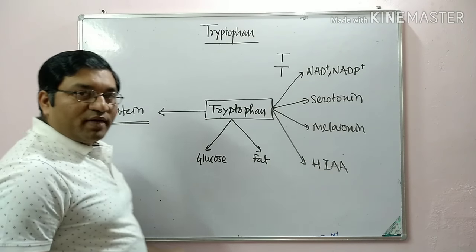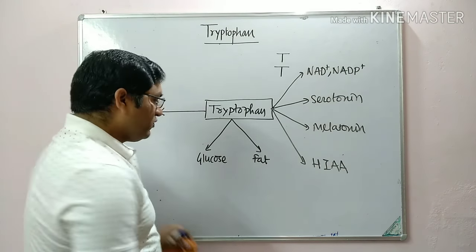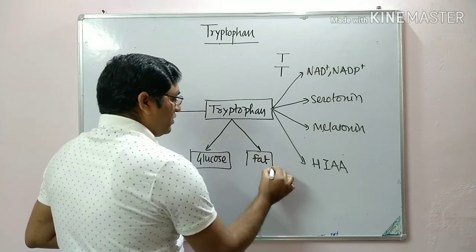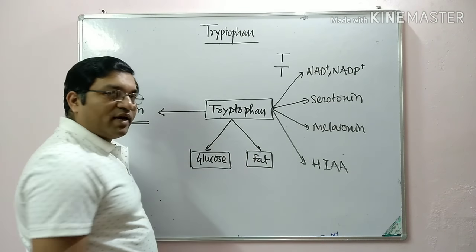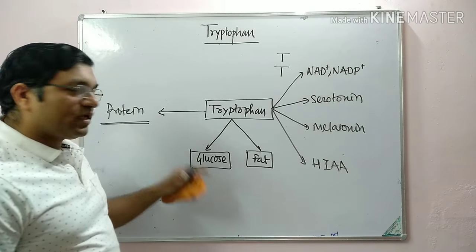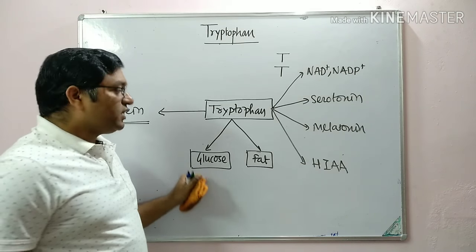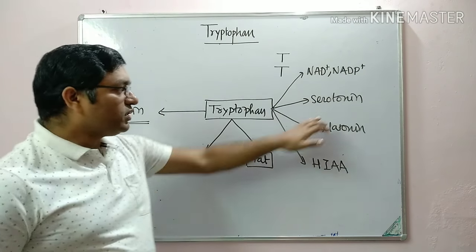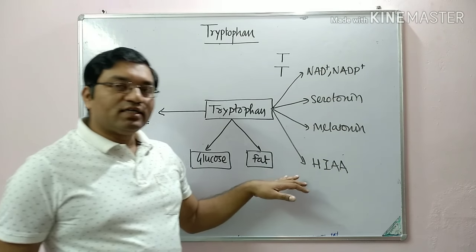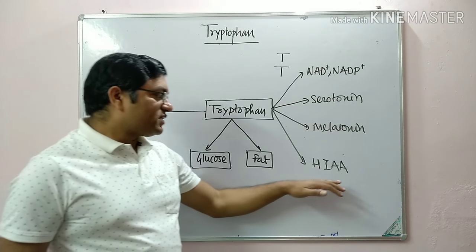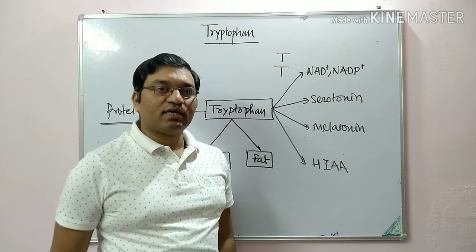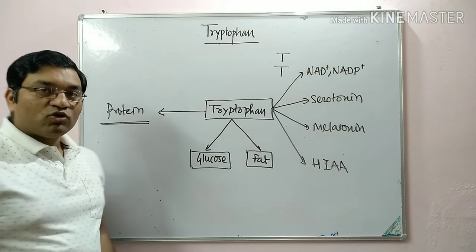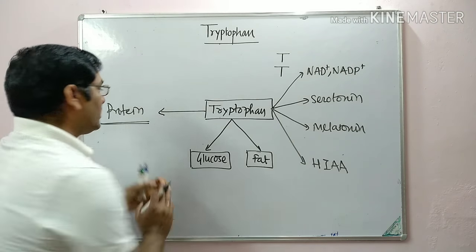In the major pathway, tryptophan gives glucose and fat, while in the minor pathway it gives NAD, NADP, serotonin, and melatonin, and is excreted as hydroxyindole acetic acid. It also participates in protein synthesis. Now we will look at the metabolism of tryptophan in detail.